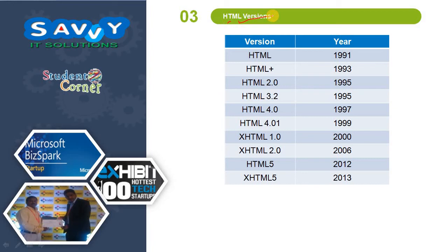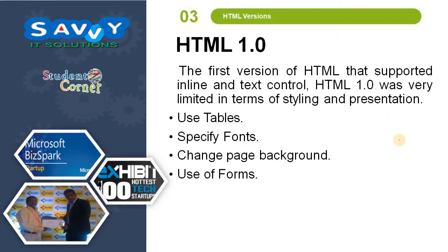The next topic is HTML versions. HTML was first introduced in 1991. The present versions are HTML5 and XHTML5, introduced in 2012 and 2013. Other versions include HTML2.0, HTML3.2, HTML4.0, HTML4.01, XHTML1.0, and XHTML2.0. HTML1.0 was the first version, supporting inline and text control, but very limited in styling and presentation — it supported tables, fonts, page background changes, and forms. HTML2.0 was the first classic version, introduced on 24th November 1995, but lacked extensions for Netscape and Microsoft, and tables had poor aligning attributes.